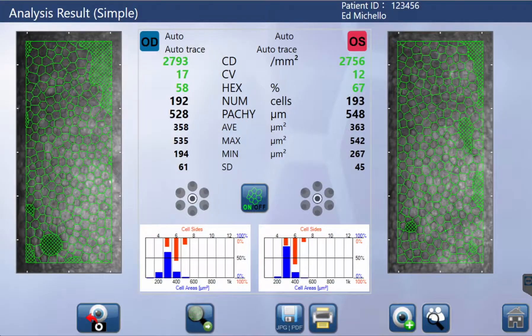The new, fully automated system can differentiate between cells and guttae, while excluding areas where cells and cell borders are not clearly visible.